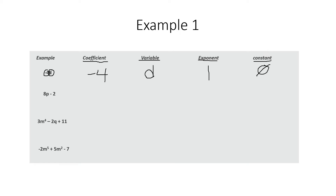Next example: 8p minus 2. The variable is p. The coefficient is 8. The exponent — like last time, there's no explicit exponent, so we write 1. The constant is negative 2, as it is not in front of the variable.